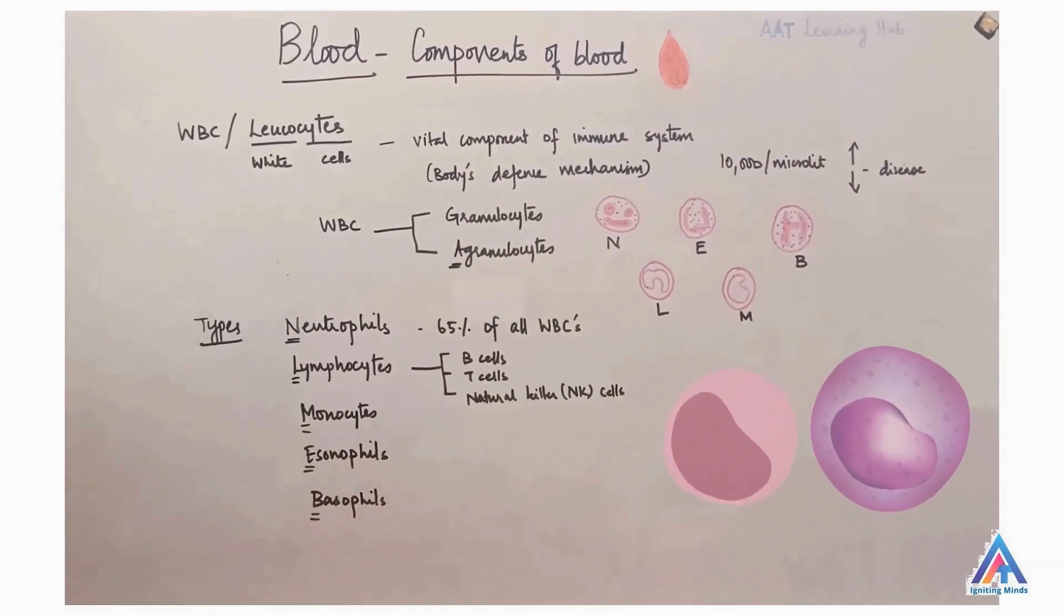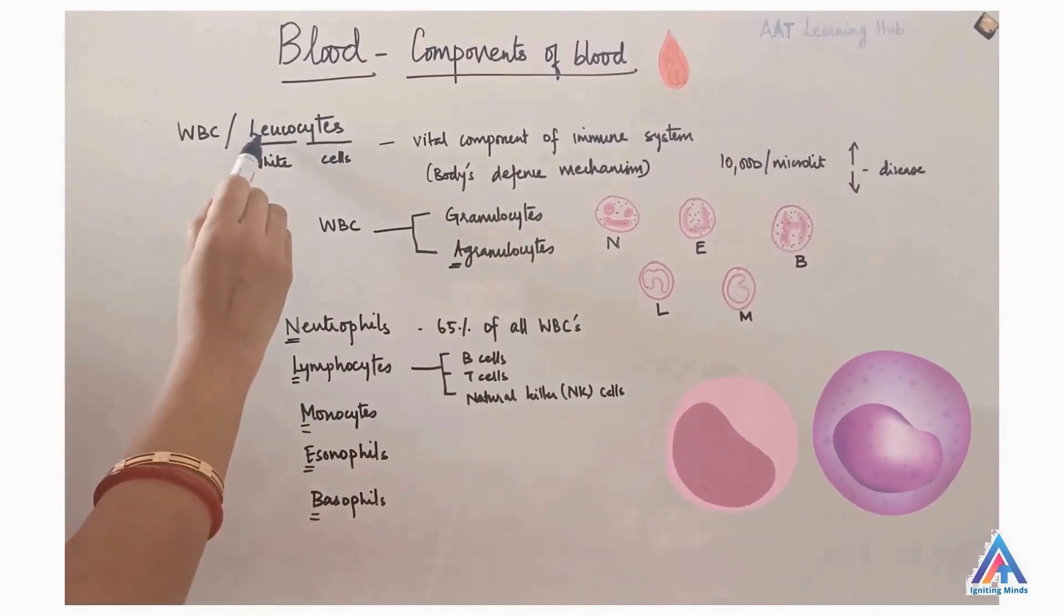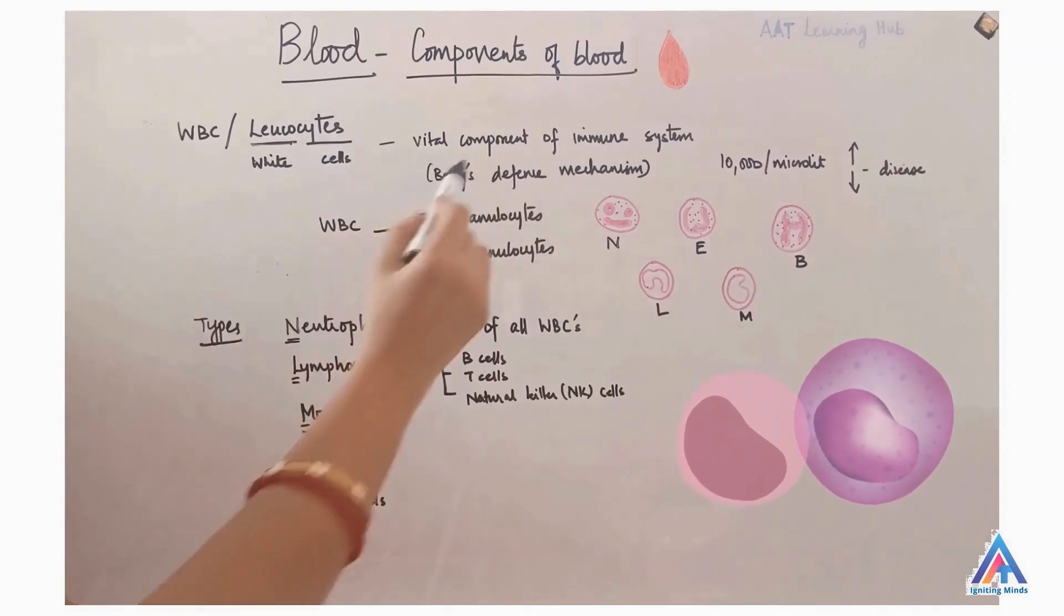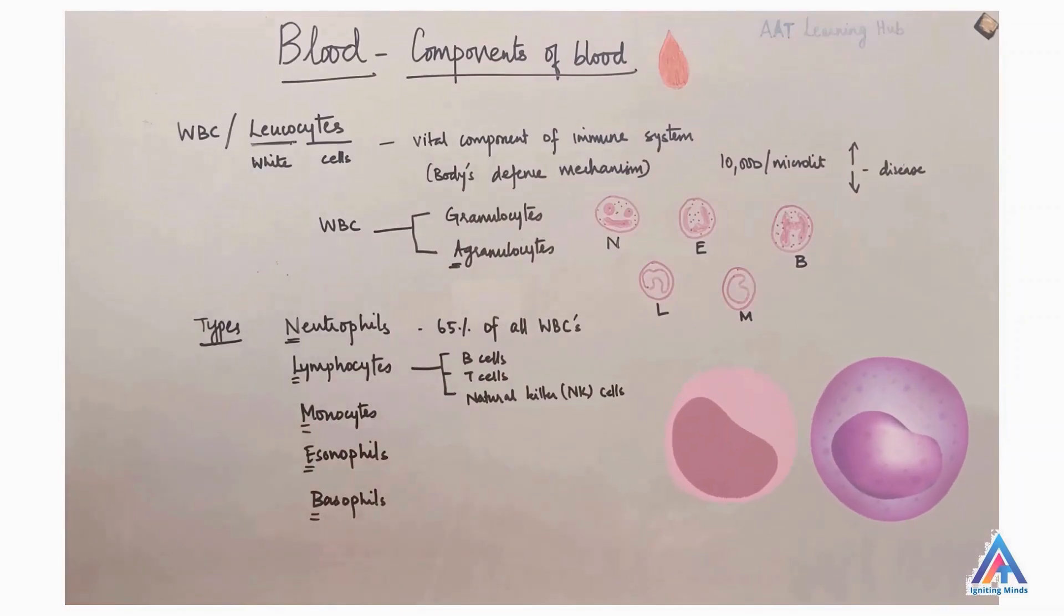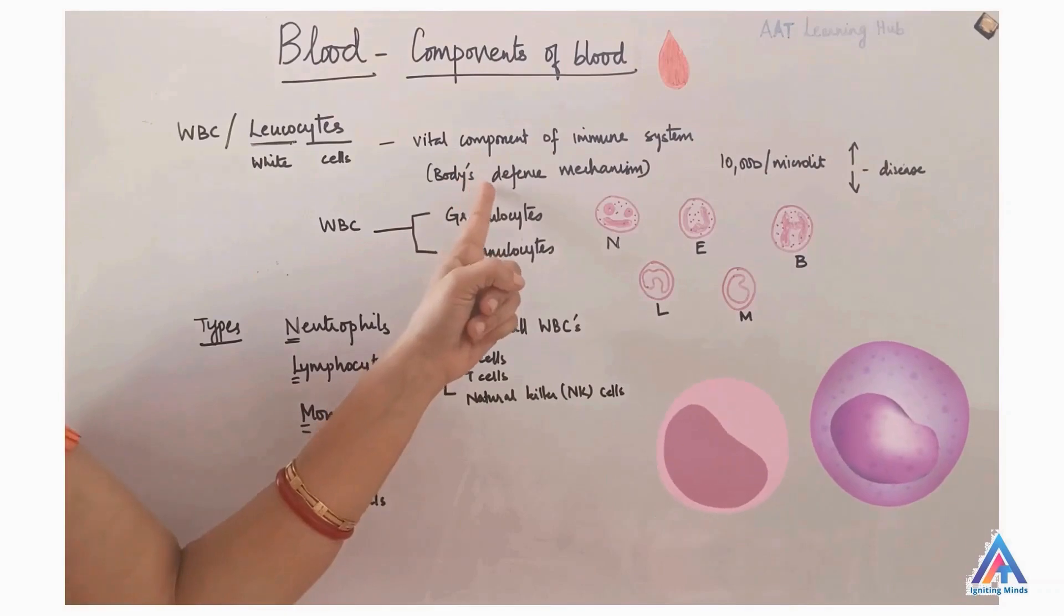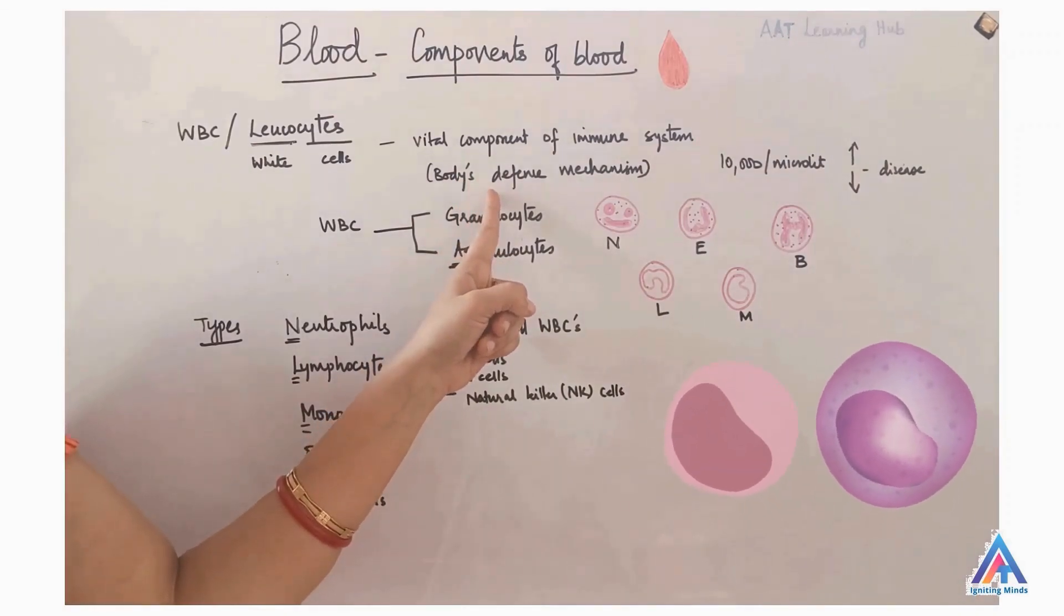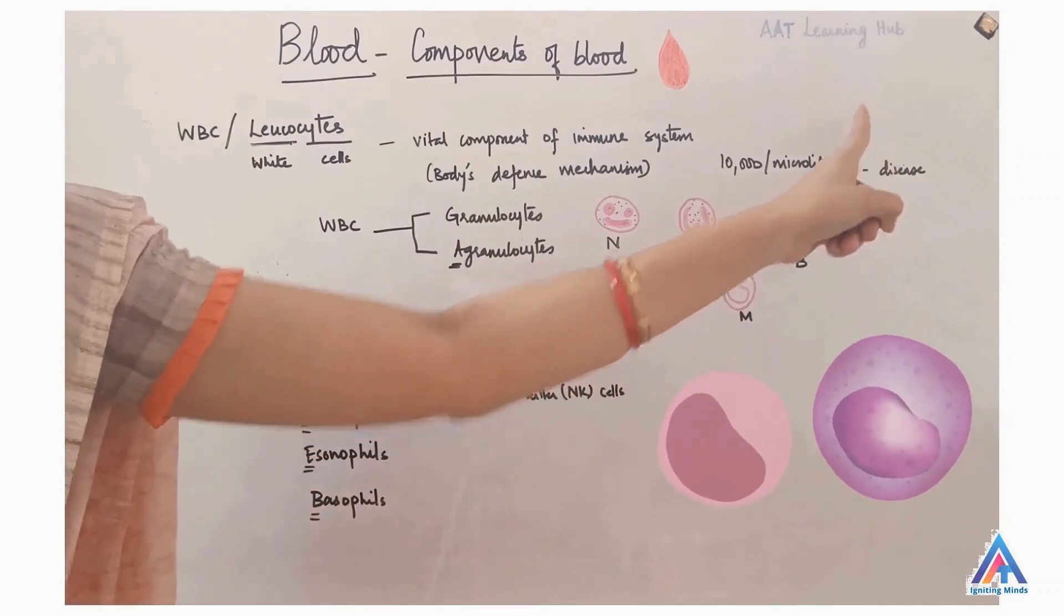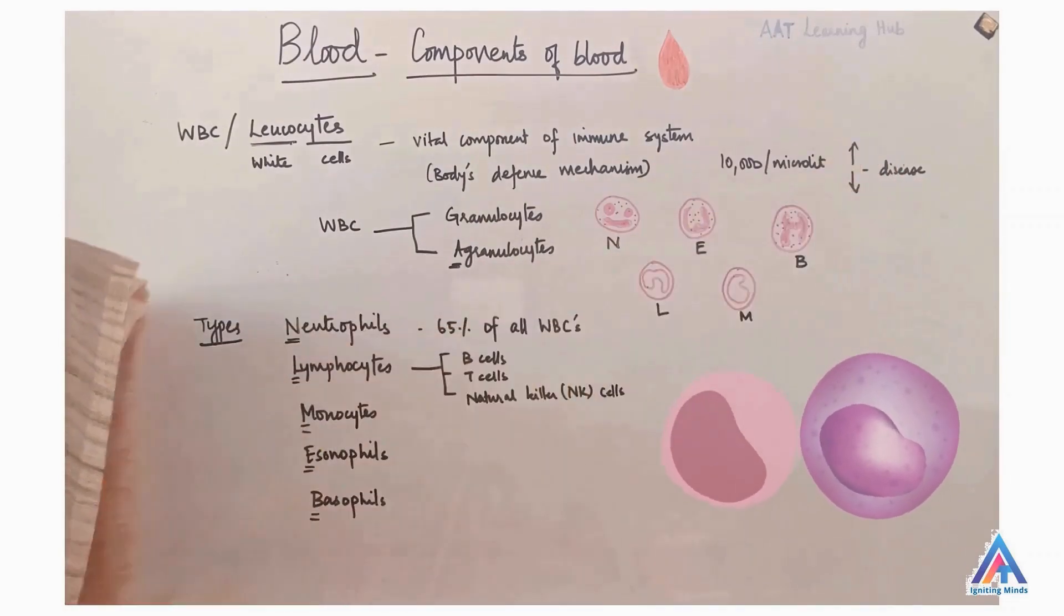The next component in buffy coat is white blood cells or leukocytes. Leuco means white and cytes means cells, hence the name white blood cells. White blood cells are the vital component of our immune system. That is, they are our body's defense mechanism and normally there are about 10,000 cells per microliter of blood. Any increase or decrease in the count indicates a disease process or infection.